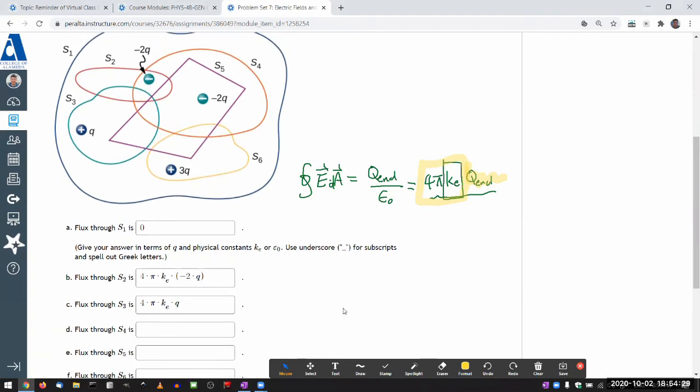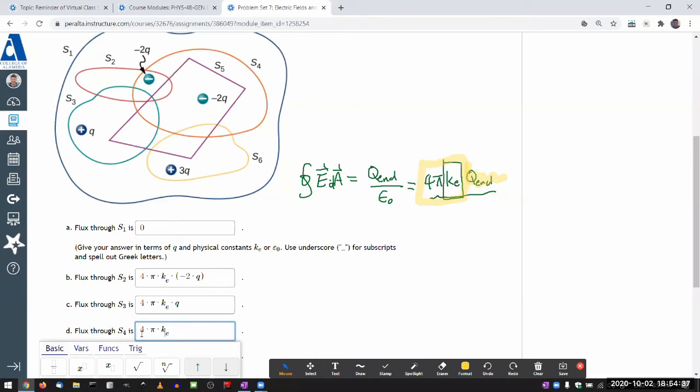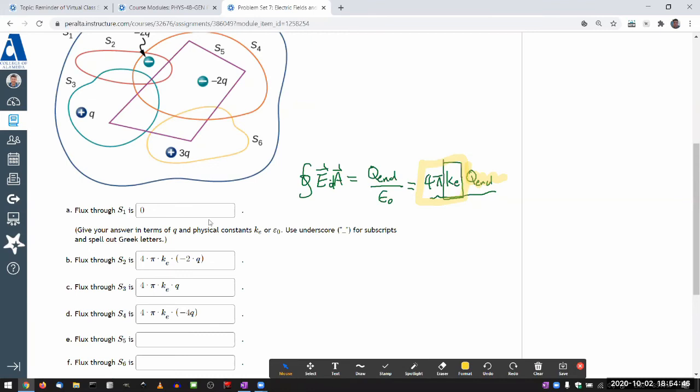Flux through S4—that includes both of the negative charges. So it's going to be 4π times Coulomb constant times -4Q. Again, I can simplify, but I don't think I have to.